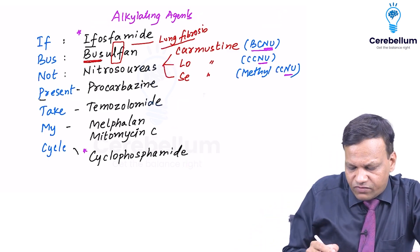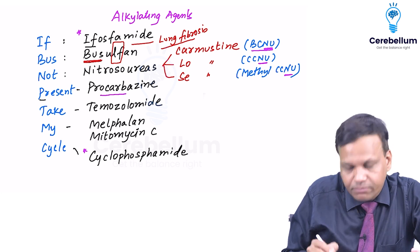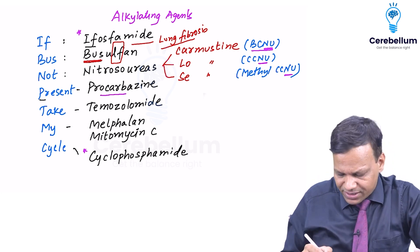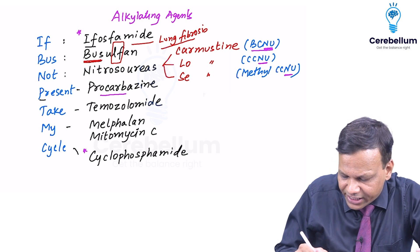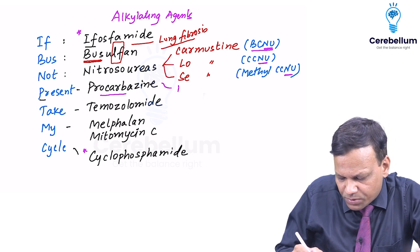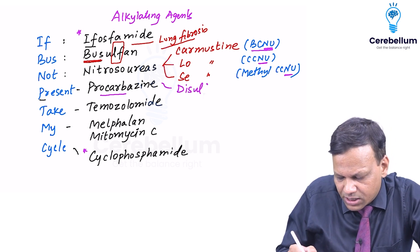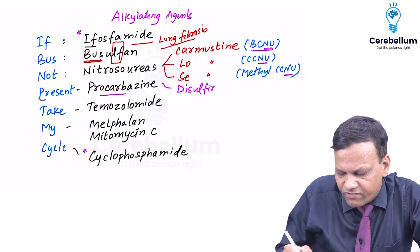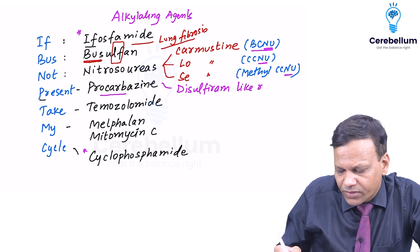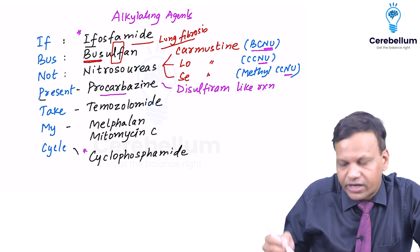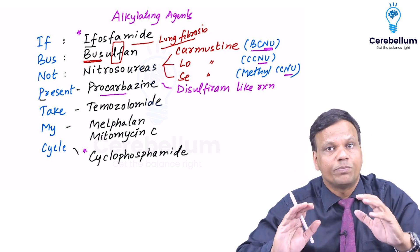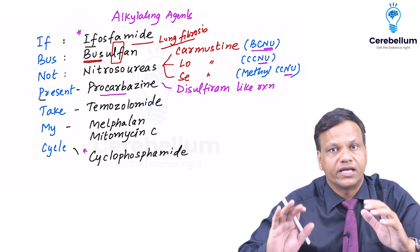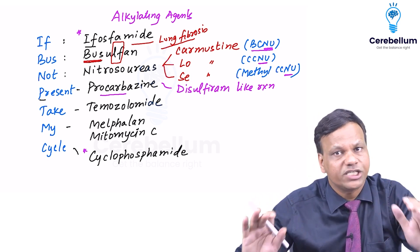Moving to Procarbazine: its important special side effect is that it can cause a disulfiram-like reaction, meaning intolerance to alcohol. So Procarbazine should be avoided in alcoholic patients.